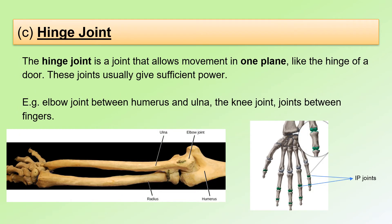Another common movable joint is the hinge joint. The hinge joint is a joint that allows movement in one plane, like the hinge of a door. These joints usually give sufficient power. Examples are the elbow joint between the humerus and the ulna, the knee joint, and the joints between fingers. Here, we can see the humerus, the radius, and the ulna at the elbow joint. And here, we can see the interphalangeal joints, which are also hinge joints.